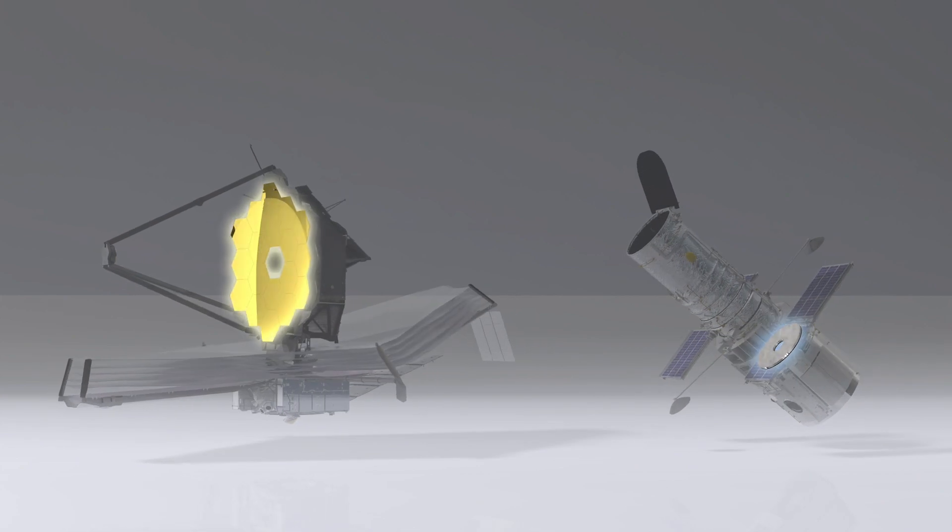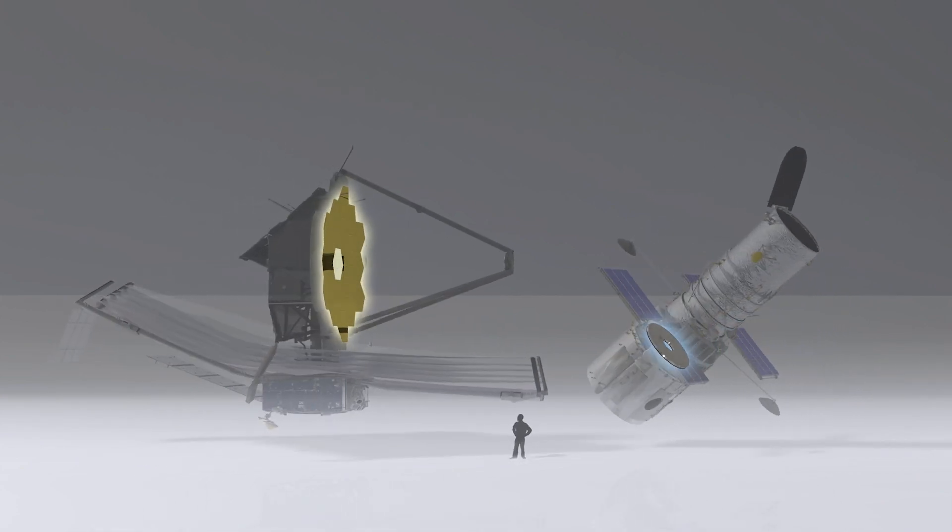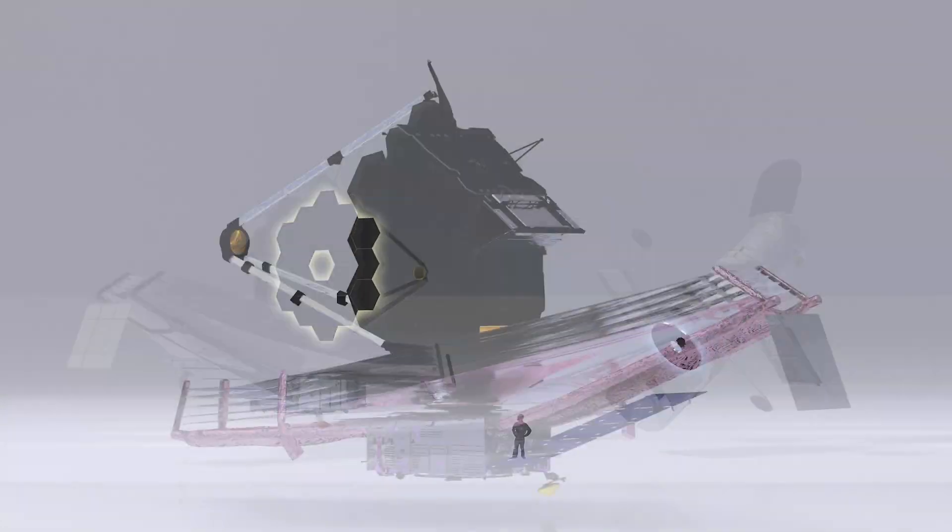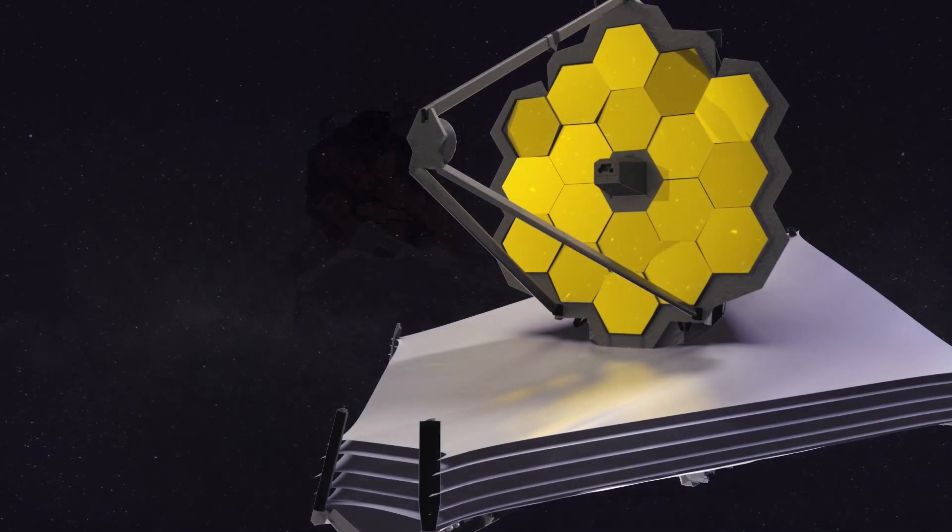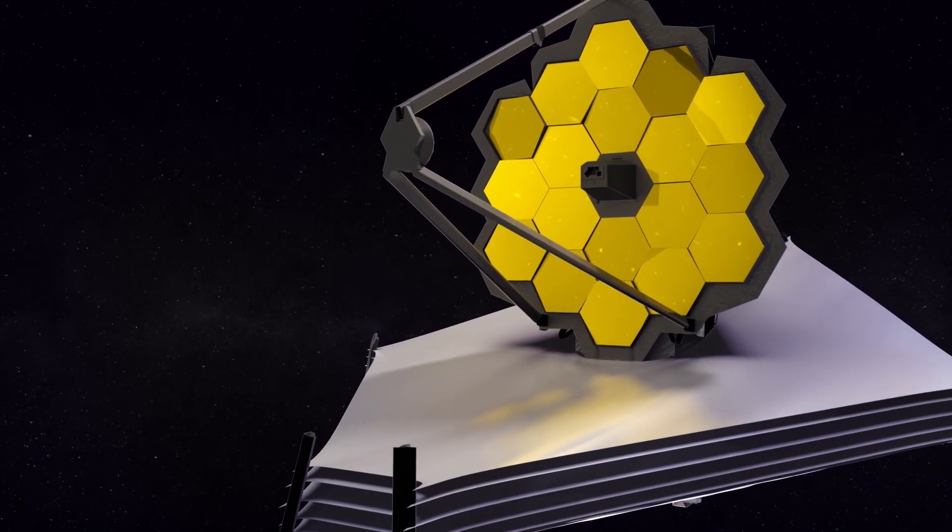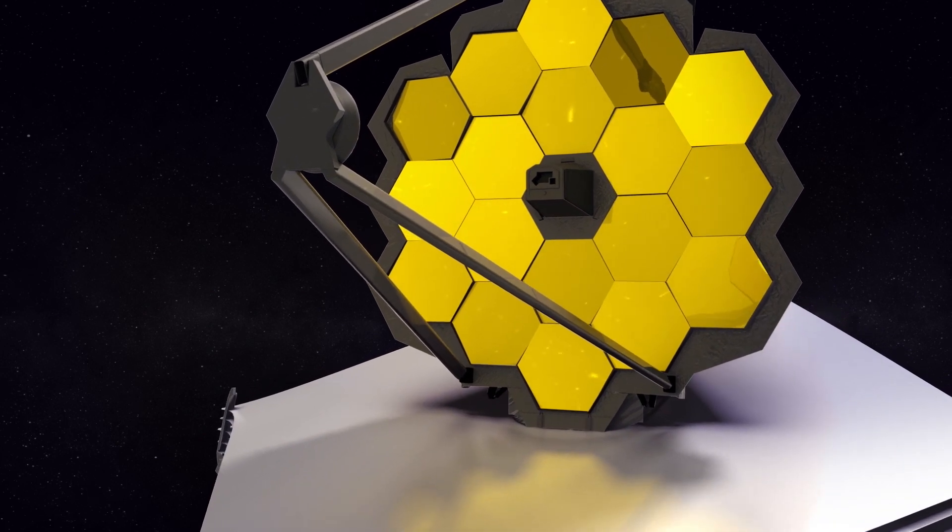Space telescopes see by using mirrors to collect and focus light from distant stars. It's very difficult to launch a giant, heavy mirror into space. So engineers gave the Webb Telescope 18 smaller mirrors that fit together like a puzzle. The mirrors fold up inside the rocket, then unfold to form one large mirror in orbit.